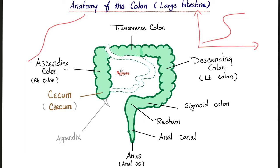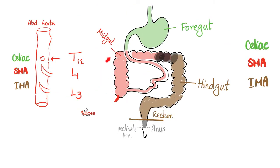Most of your stool is stored in the rectum until you go to the bathroom. The colon is anatomically important because the proximal part belongs to the midgut, but the distal part belongs to the hindgut. That's why the proximal part is supplied by the superior mesenteric artery and the distal part by the inferior mesenteric artery. The proximal part is drained by the superior mesenteric vein and the distal part by the inferior mesenteric vein. Lymph node drainage follows the names of the arteries.